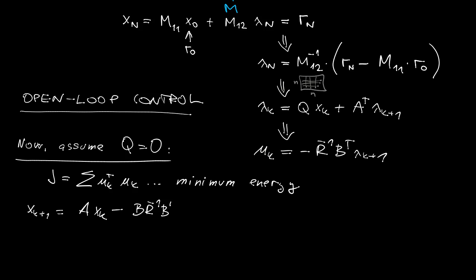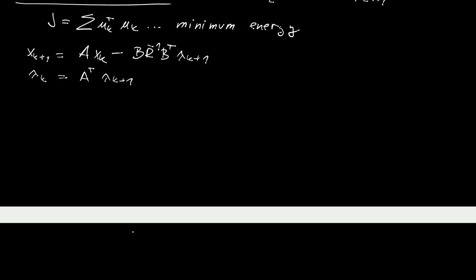All right, then the state equation and the co-state equations look like this. And it's now obvious why I needed to have the Q matrix zero, because in that case the co-state equation is only containing lambda terms, which I can now solve for lambda at k as a function of lambda at the final time.